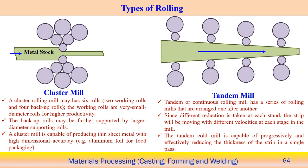There is also a cluster mill and a tandem mill. In the cluster mill, many rolls are supported to bring rigidity to the system. The shape and thickness of the sheet is decided by the rolls in contact with the workpiece, while the other rolls are backup or supporting rolls. Large diameter supporting rolls allow the cluster mill to produce very thin sheet metal with high dimensional accuracy. For example, aluminum foil for food packaging can be produced using cluster mill operations.